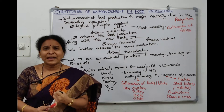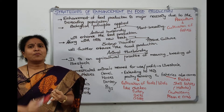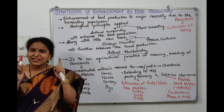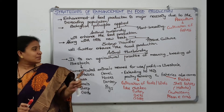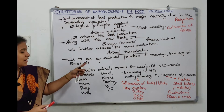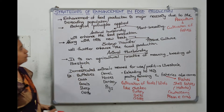In addition to fisheries and poultry farming, cultivation of honeybees (apiculture) and silkworm (sericulture) also come under animal husbandry.